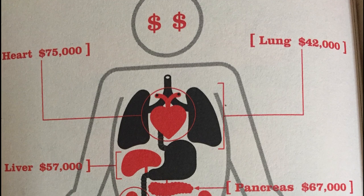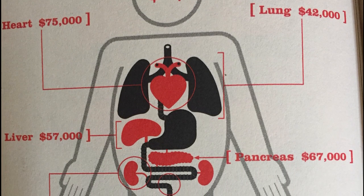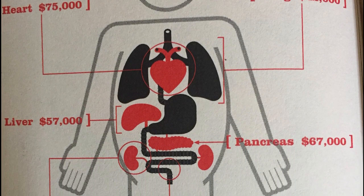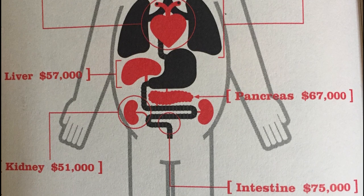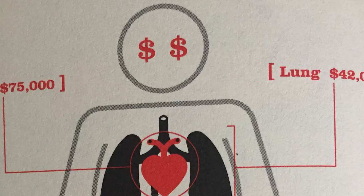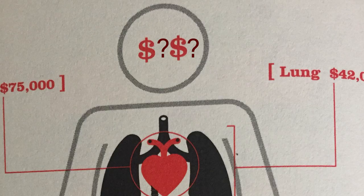A heart is worth about $75,000. A liver, $50,000. However, there is no hospital price for a brain — that's because brains can't be transplanted, and if they could, you wouldn't want one anyway — you would be a completely different person. But on average, labs and universities pay about $600 for a brain for research.